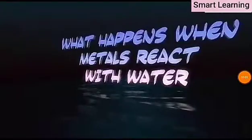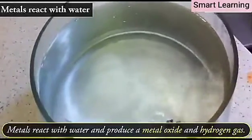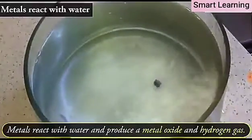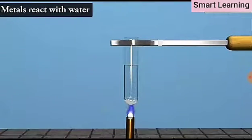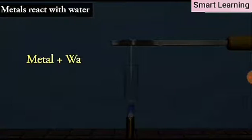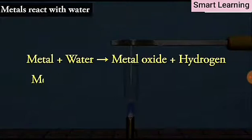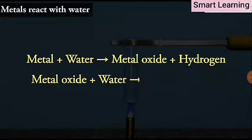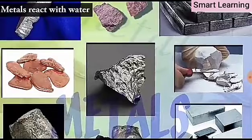Let us see some more reactions to arrive at a conclusion about the order of reactivity of these metals. With water, metals react with water and produce a metal oxide and hydrogen gas. Metal oxides that are soluble in water dissolve in it to further form metal hydroxide. The reaction being: metal plus water gives metal oxide plus hydrogen. Metal oxide plus water gives metal hydroxide. But all metals do not react with water.